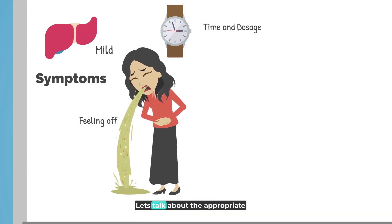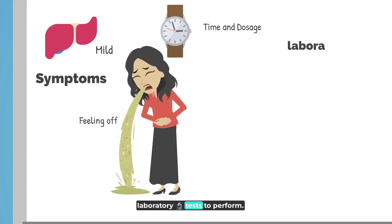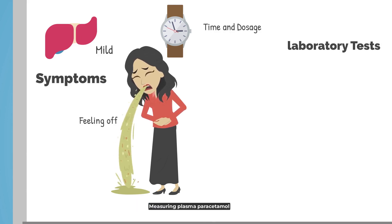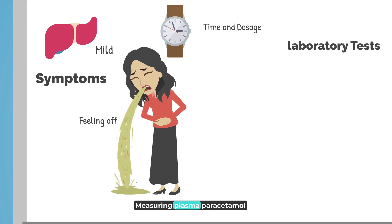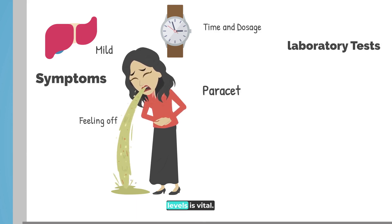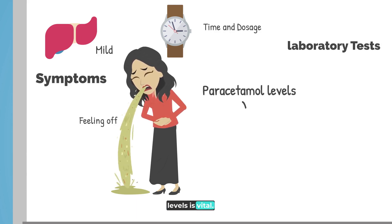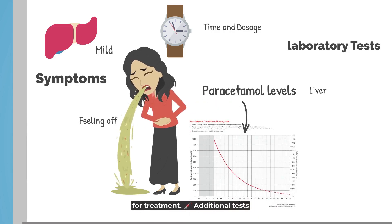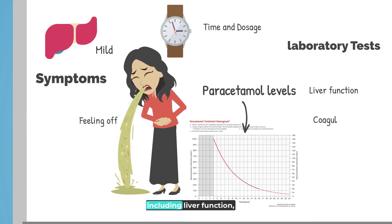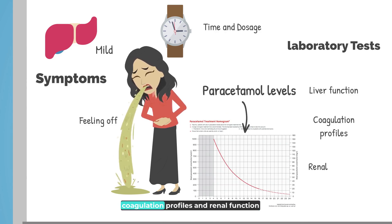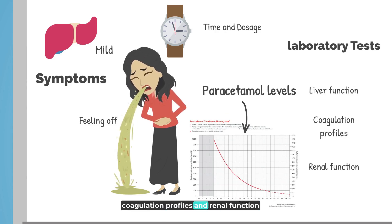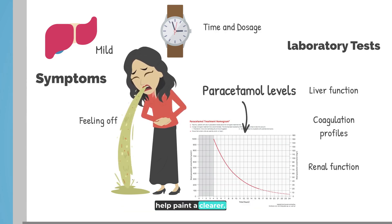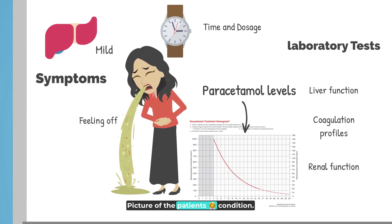Let's talk about the appropriate laboratory tests to perform. Measuring plasma paracetamol levels is vital. Using a nomogram, we can determine the need for treatment. Additional tests, including liver function, coagulation profiles, and renal function, help paint a clearer picture of the patient's condition.